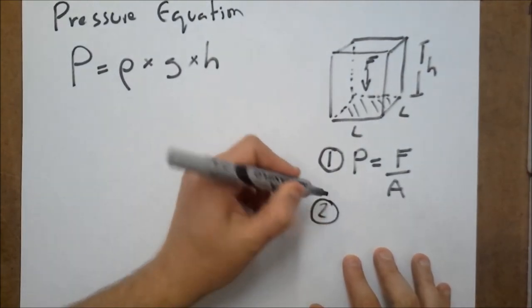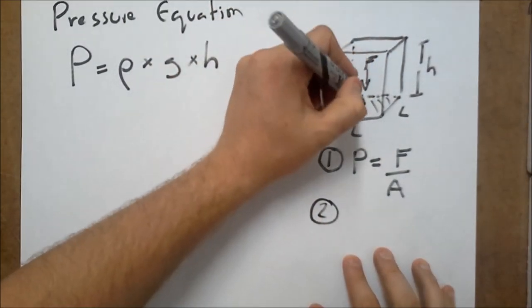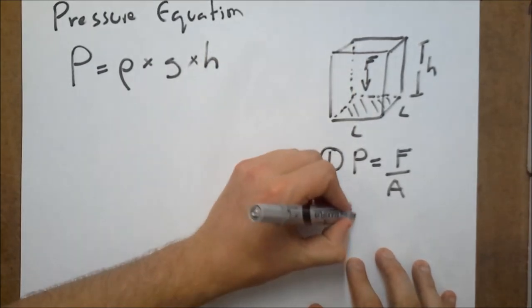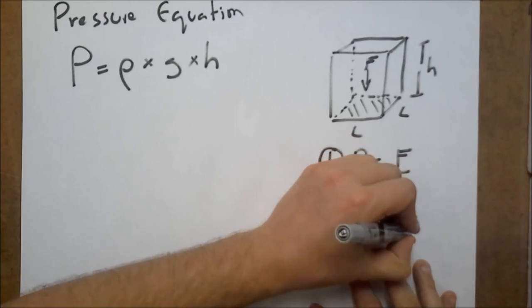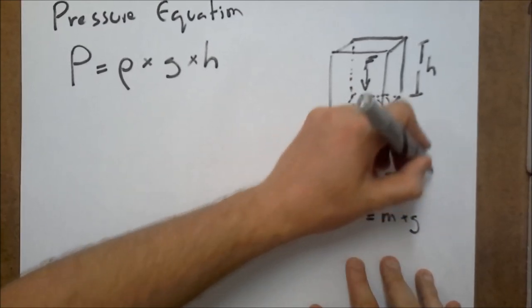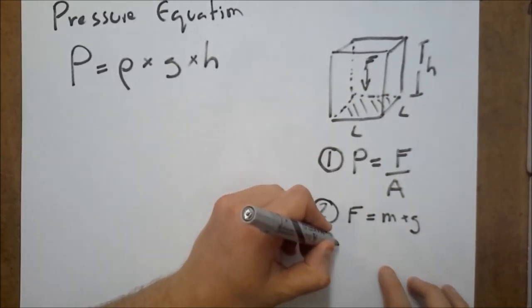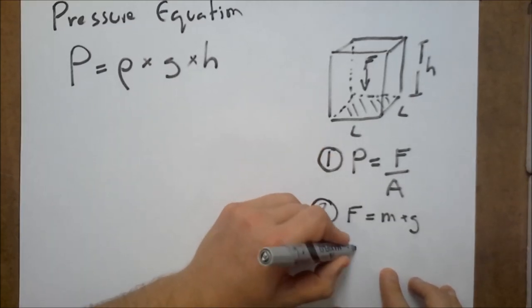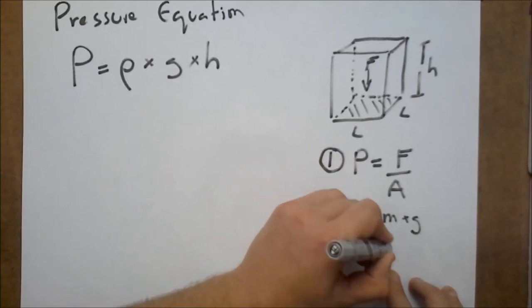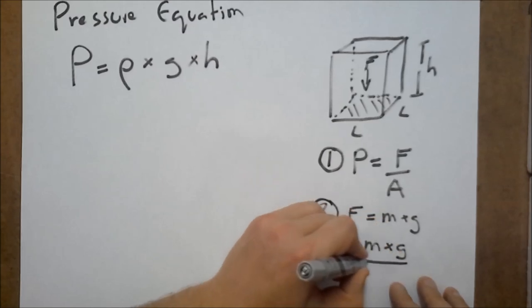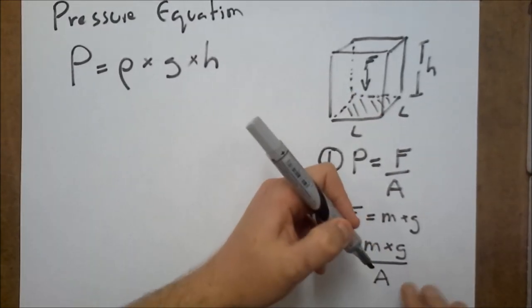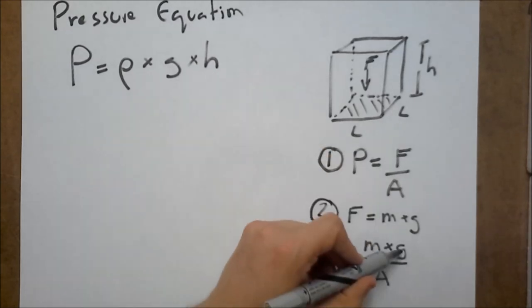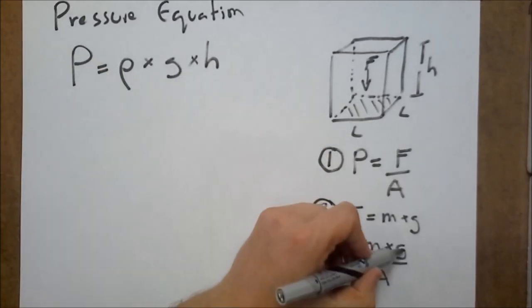Now, what is the value of that force acting down? Well, force is equal to mass times gravitational acceleration. And we can put this in here. So, pressure then becomes m times g divided by area. So far we've managed to get g in.